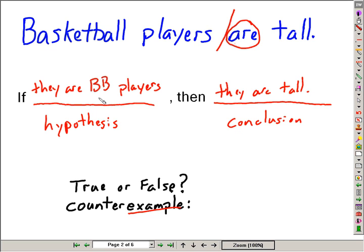An example in which the hypothesis is true, but the conclusion is not going to happen, is when we consider the sentence false. Do you know of an example of a basketball player who is not tall?